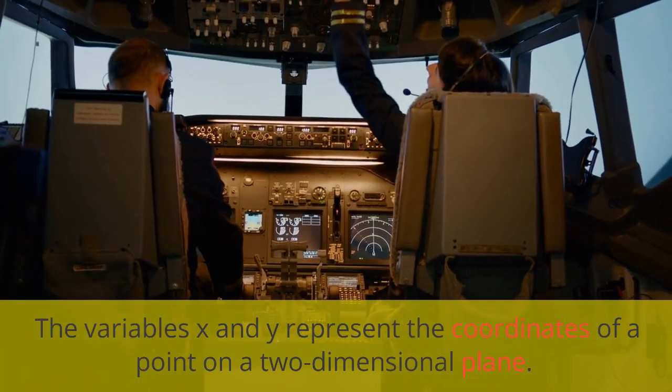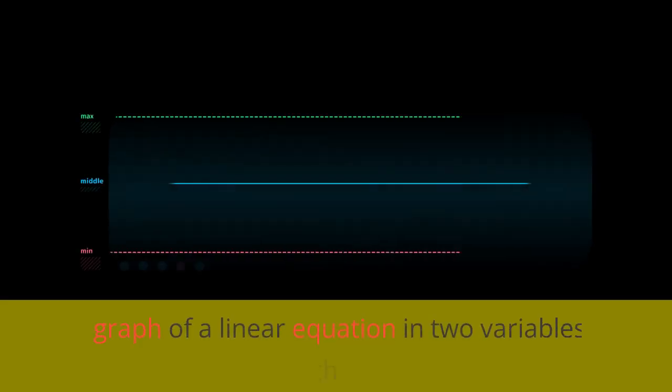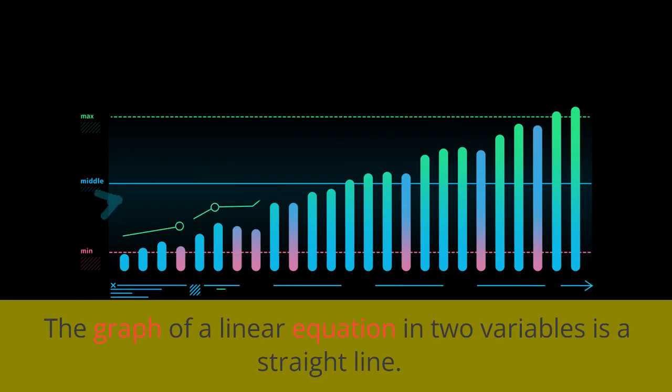The variables x and y represent the coordinates of a point on a two-dimensional plane. The graph of a linear equation in two variables is a straight line.